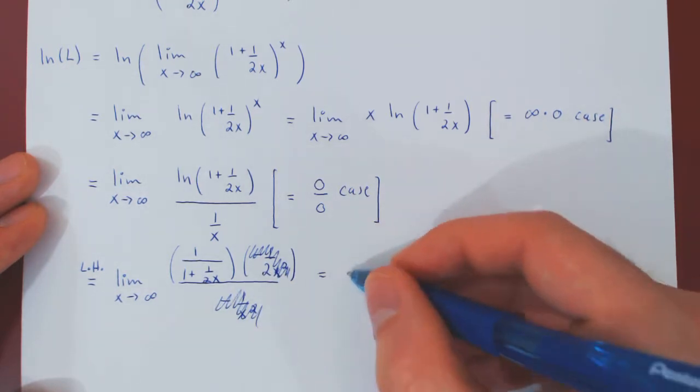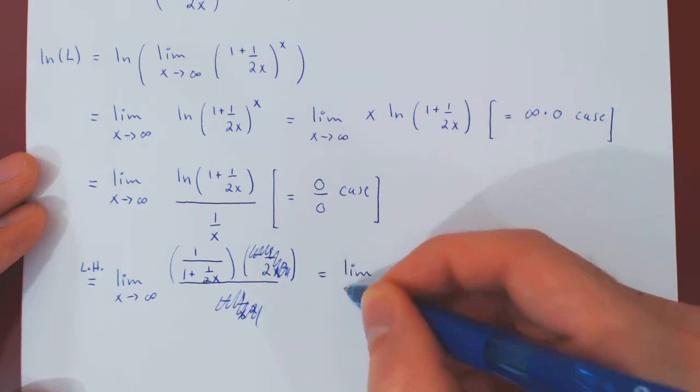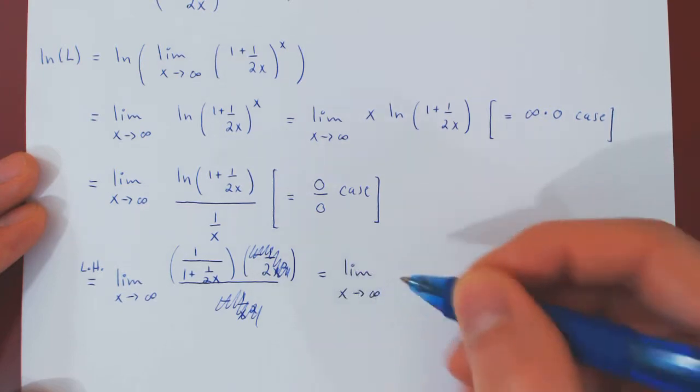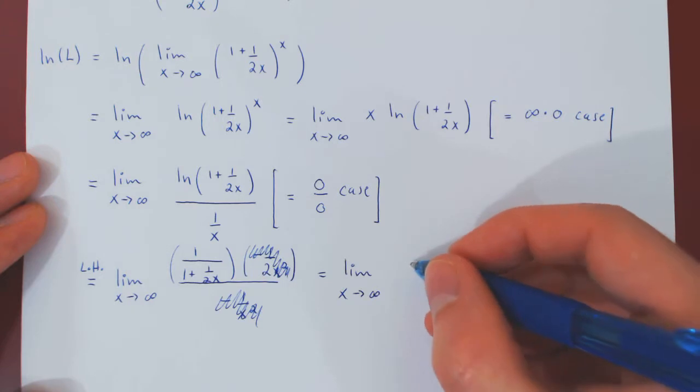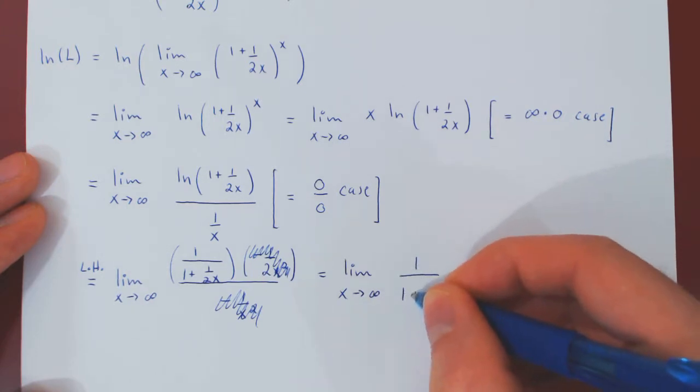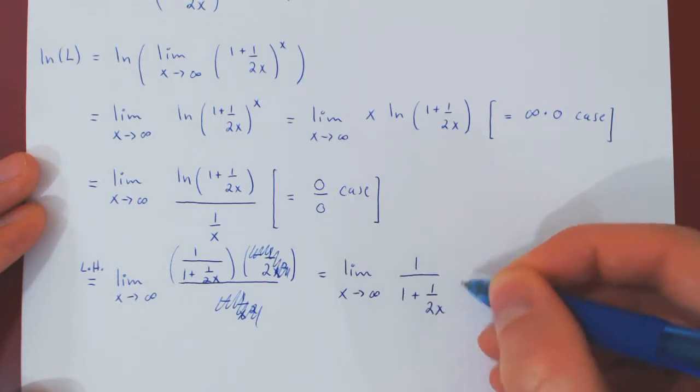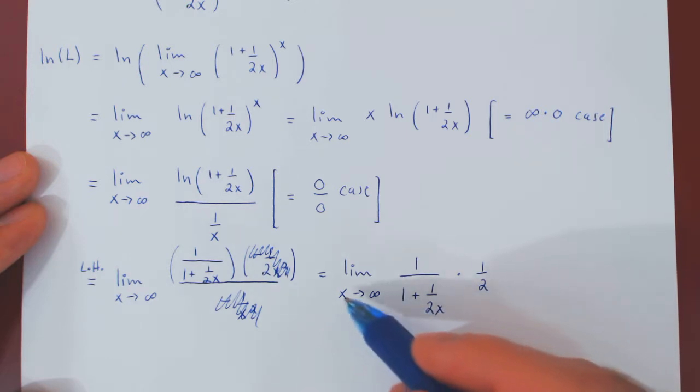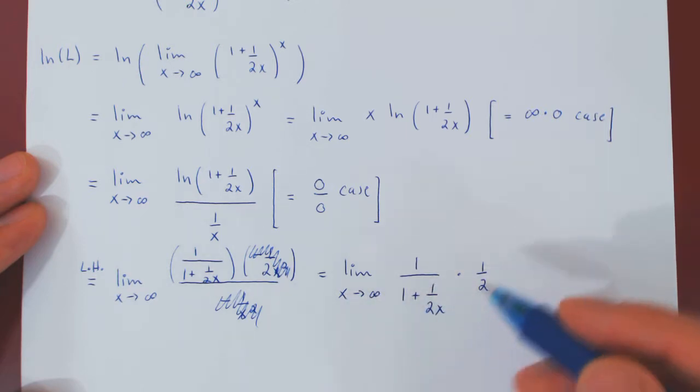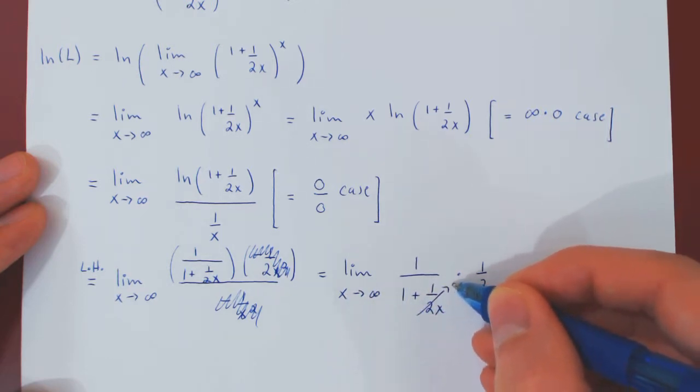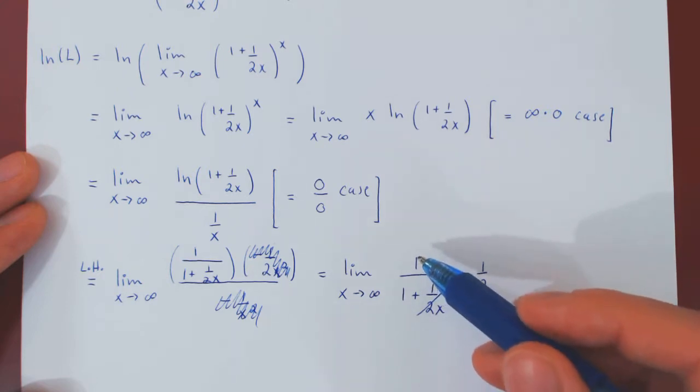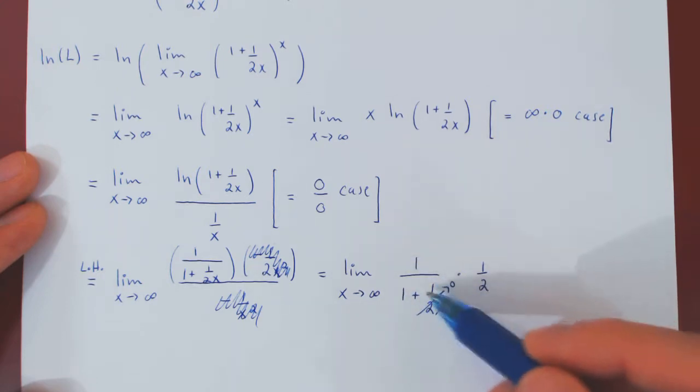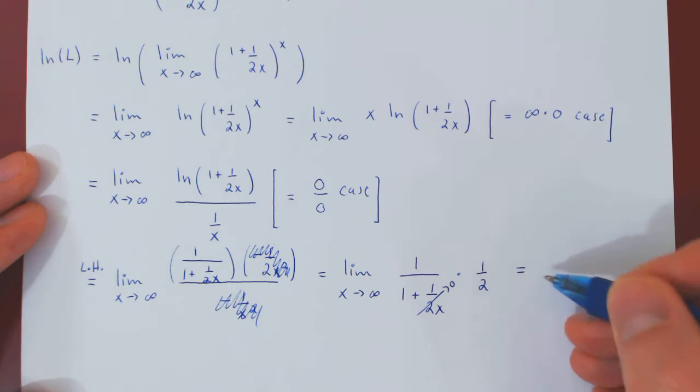So what are we left with? The limit as x tends to infinity, the first expression, so 1 over 1 plus 1 over 2x, times 1 over 2, so times 1 half. And the limit now is completely trivial. As x tends to infinity, 1 over 2x tends to 0. So the first term will approach 1 over 1 plus 0, which is 1, times 1 half is 1 half. And now we have the answer. Or do we?